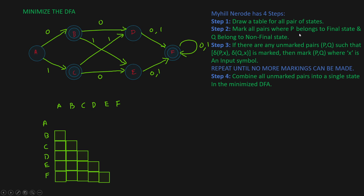The second step is mark all pairs where P belongs to a final state and Q belongs to a non-final state. So state B and state A — A is a non-final state, B is a final state, so you mark it. What about C and A? C is a final state and A is a non-final state, so you mark this also. What about C and B? Both of them are final states, so we don't mark this.